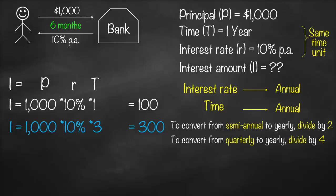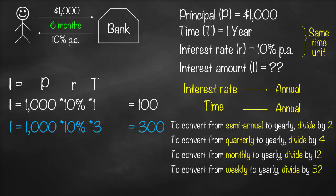If time is expressed as quarters, we divide by four because there are four quarters in a year. If time is expressed as months, we divide by 12 because there are 12 months per year. If time is expressed as weeks, we divide by 52 because there are 52 weeks per year. If time is expressed as days, we divide by 365 because there are 365 days per year.